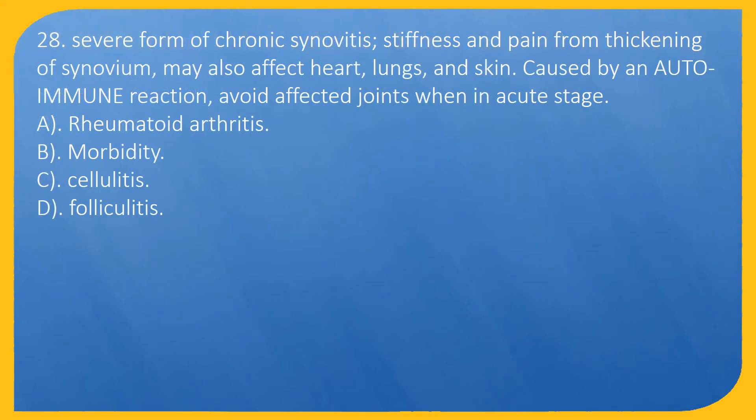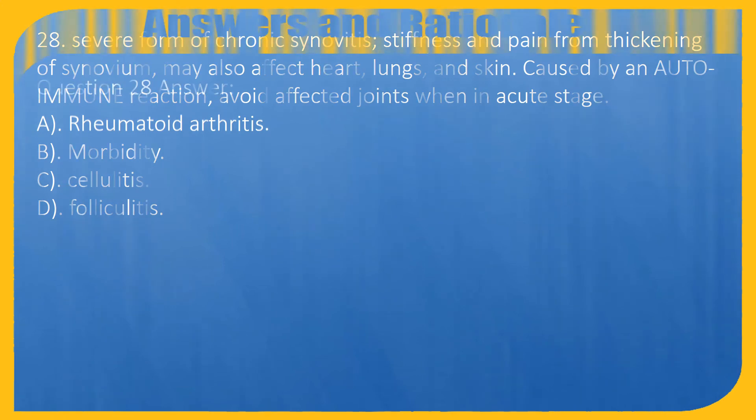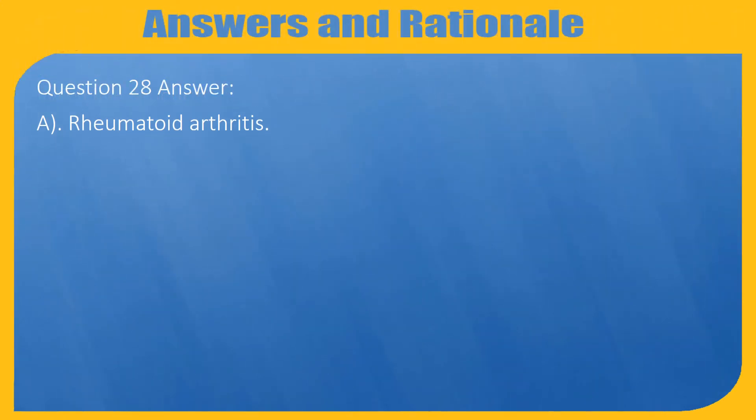Question 28. Severe form of chronic synovitis. Stiffness and pain from thickening of synovium. May also affect heart, lungs, and skin. Caused by an autoimmune reaction. Avoid affected joints when in acute stage: A. Rheumatoid Arthritis, B. Morbidity, C. Cellulitis, D. Folliculitis. Question 28 Answer: A. Rheumatoid Arthritis.